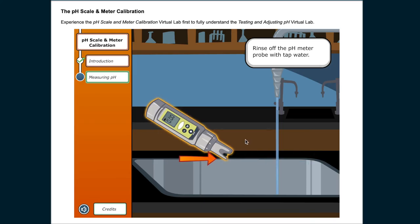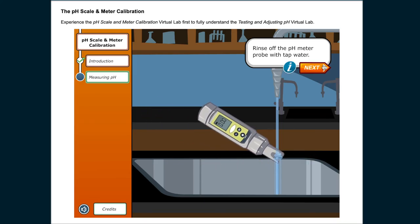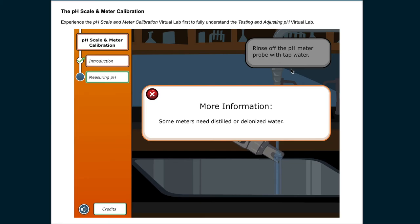Rinse off the pH meter probe with tap water. Some meters need distilled or deionized water.